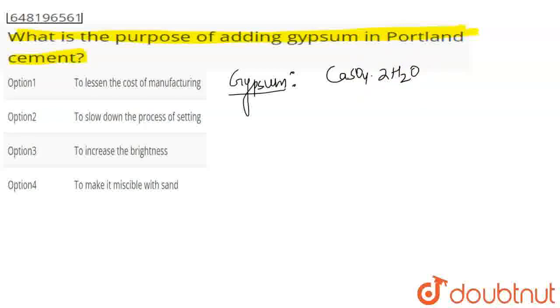Gypsum is a chemical which you add to Portland cement in order to prevent early hardening of your cement.